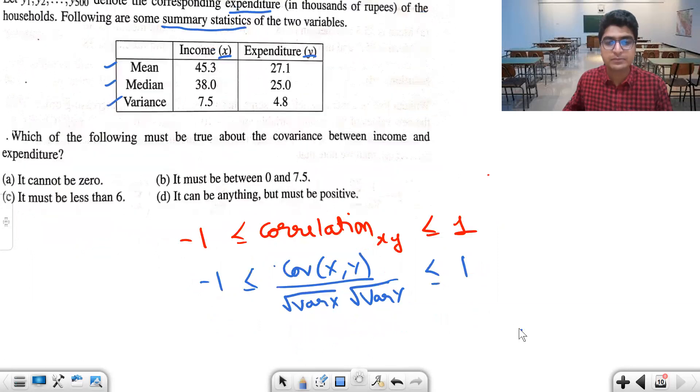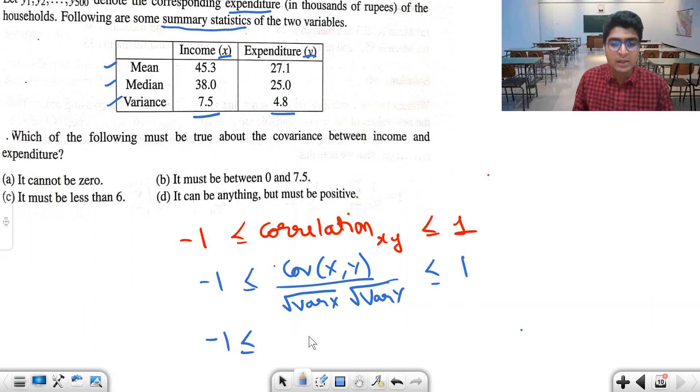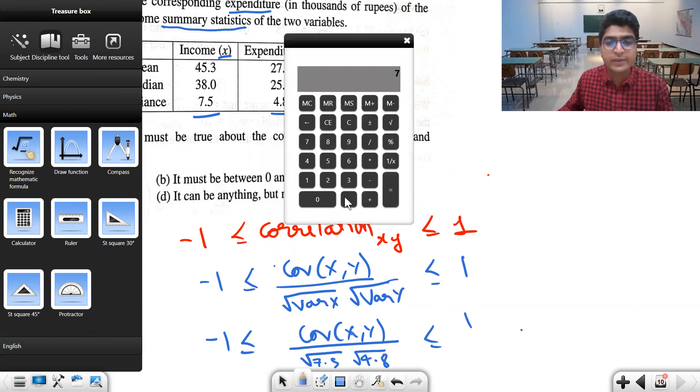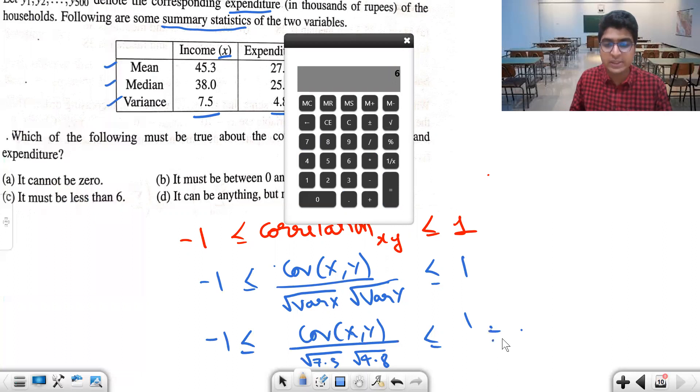Now we can use the variance values. We have variance of X equals 7.5 and variance of Y equals 4.8. So covariance X,Y upon square root of 7.5 times square root of 4.8 is less than or equal to one. Using a calculator, square root of 7.5 times 4.8 equals six. This implies that covariance X,Y should be less than or equal to six.